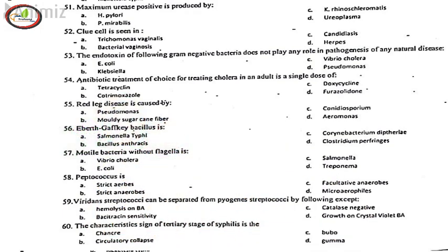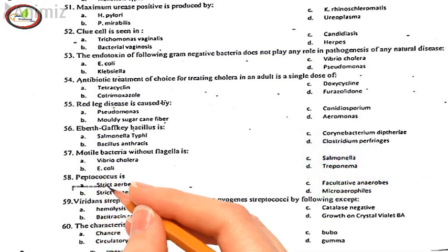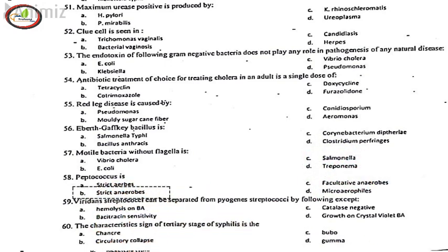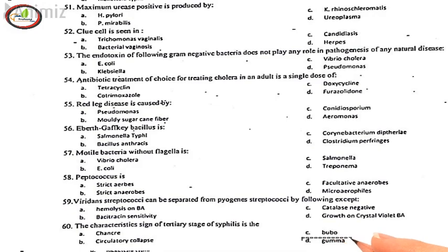57. Motile bacteria without flagella is, D. Treponema. 58. Peptococcus is, B. Strict anaerobes. 59. Viridans streptococci can be separated from pyogenes streptococci by the following except, C. Catalase negative. 60. The characteristic sign of tertiary stage of syphilis is the, D. Gumma.